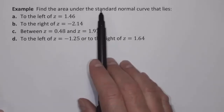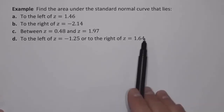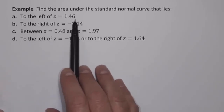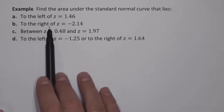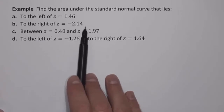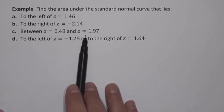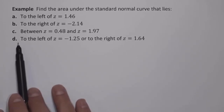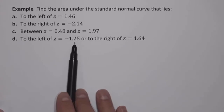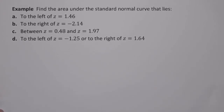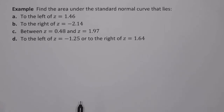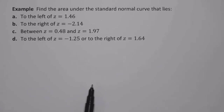In this video, we want to find the area under the standard normal curve for some given conditions. In Part A, we want to find the area to the left of z equals 1.46. In Part B, the area to the right of z equals negative 2.14. In Part C, the area between z equals 0.48 and z equals 1.97. And in Part D, the area to the left of z equals negative 1.25 or to the right of z equals 1.64. I'll show how to find these areas using the standard normal table from the appendix of the book, and then subsequent videos will cover the calculator and StatCrunch.